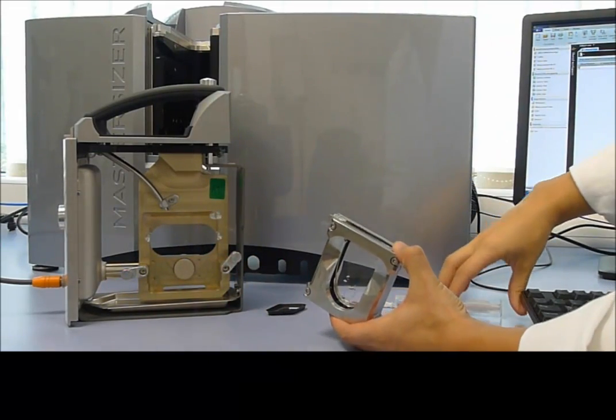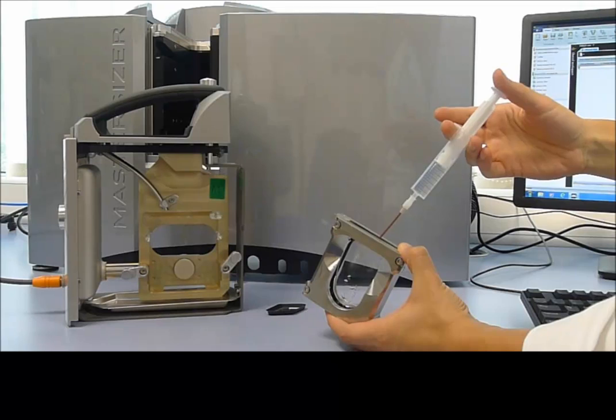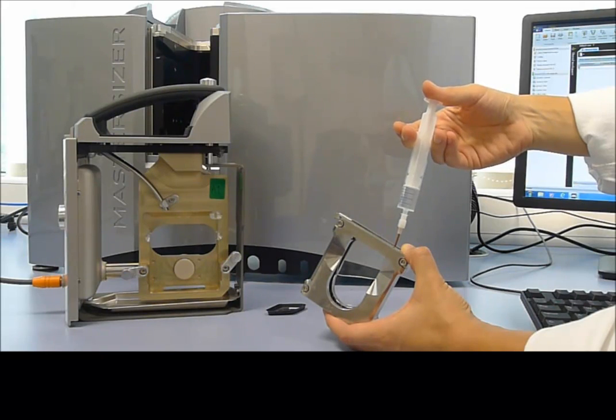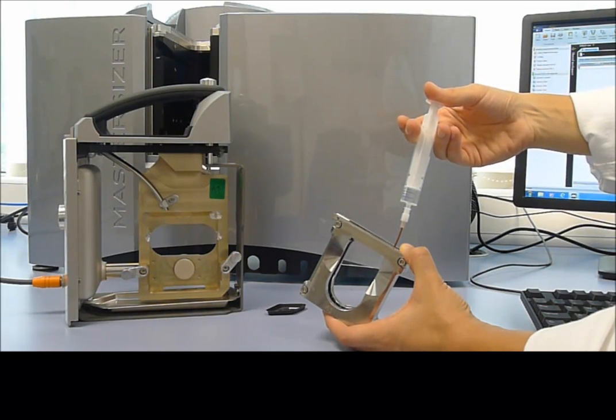The first thing we are going to do is to fill the cuvette with dispersant. In this case we are using water, and we can fill the cuvette to between 6 and 7 mils. We are using a syringe to fill it gradually so that we don't introduce any bubbles.